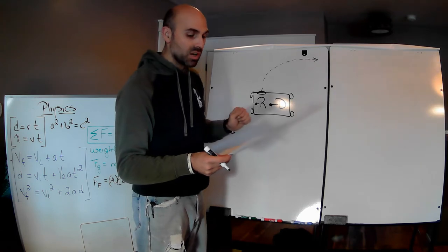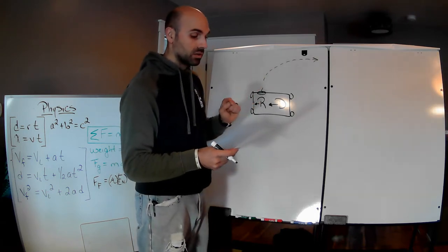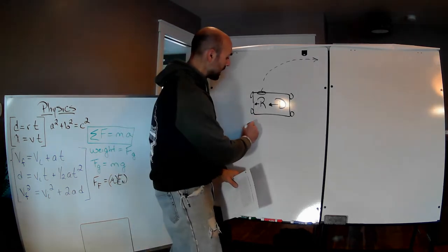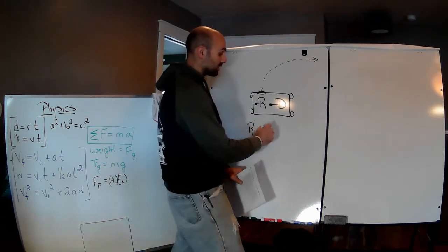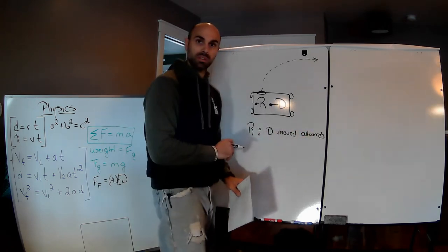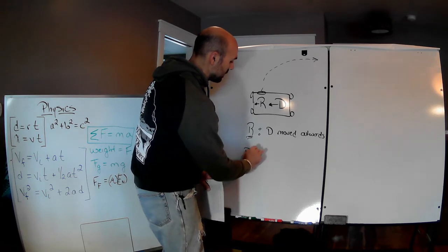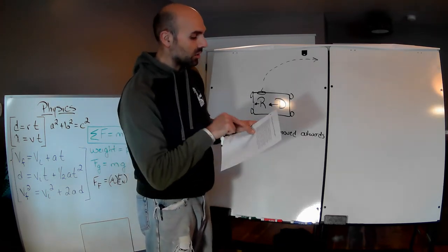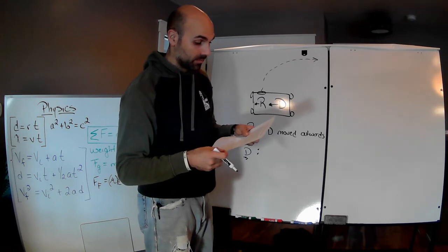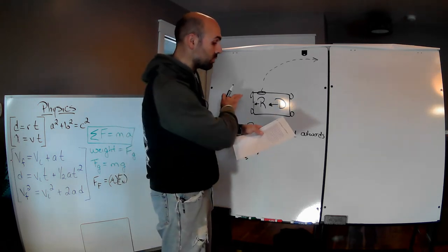Rex suggests that objects moving in circular motion experience an outward force. Thus, as Rex made the turn, Doris experienced an outward force pushing her towards Rex — Rex thought that Doris was forced outwards. Now Doris, on the other hand, is a smart cookie. She disagrees. She argued that objects which move in a circular path experience an inward force. Thus, as Rex traveled in a circle, the force of his door pushed inwards on him.